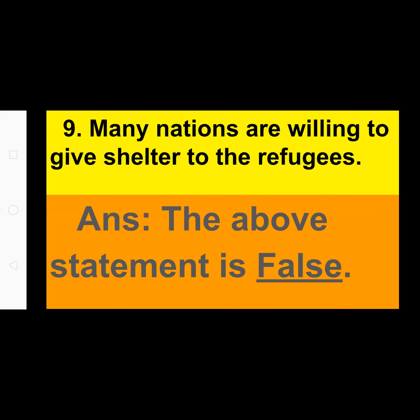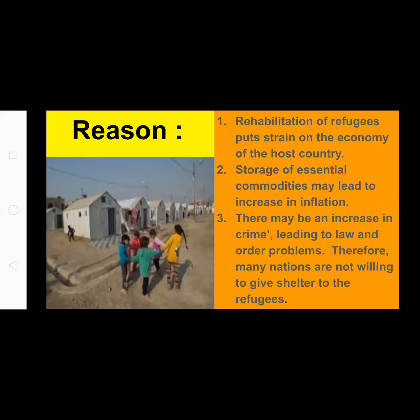Next: many nations are willing to give shelter to refugees. This statement is FALSE. Reason: rehabilitation of refugees puts strain on the economy of the host country. Shortage of natural resources may lead to increased inflation. There may be an increase in crime leading to law and order problems. Therefore, many nations are not willing to give shelter to refugees.